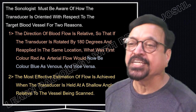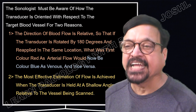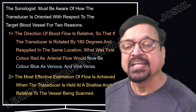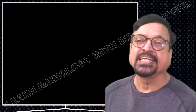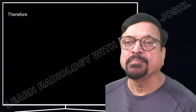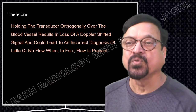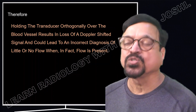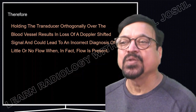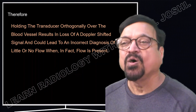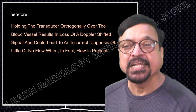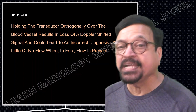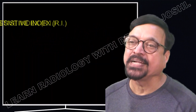The most effective estimation of flow is achieved when the transducer is held at a shallow angle relative to the blood vessel — this angle is important for proper readings, proper colours, and proper diagnosis. Holding the transducer orthogonally over the blood vessel will result in loss of Doppler shift signals and could lead to an incorrect diagnosis of little or no flow. In fact, the flow is present but your technique is wrong, leading to misinterpretation.